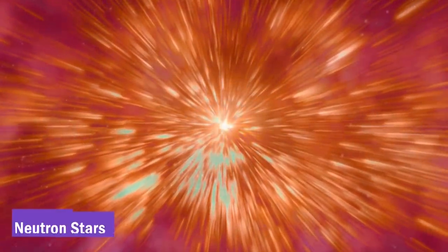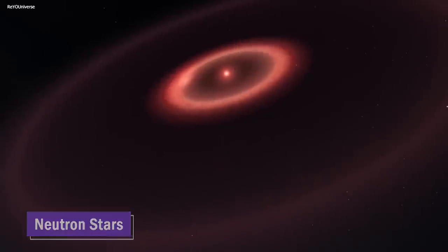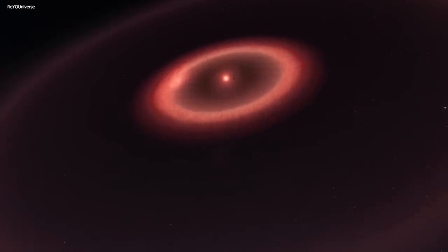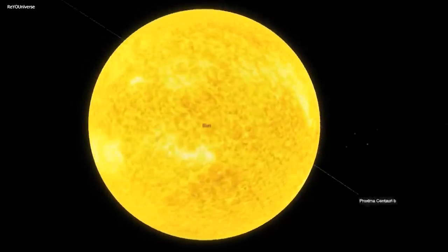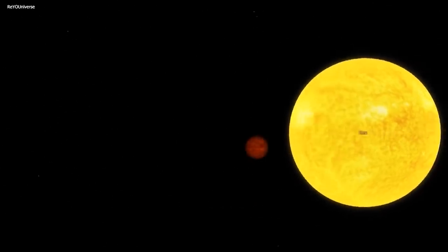Smaller stars, when they die, transform into something called neutron stars. They're super dense, but not dense enough to trap light. However, if a star is a heavyweight champ, about three times the mass of our sun, then a mind-boggling possibility arises.